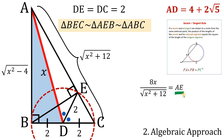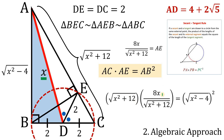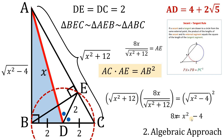Now applying the secant-tangent rule: AC times AE equals AB squared. Substituting: √(x²+12) times (8x / √(x²+12)) equals (√(x²−4))². The √(x²+12) terms cancel, giving 8x equals x² minus 4.